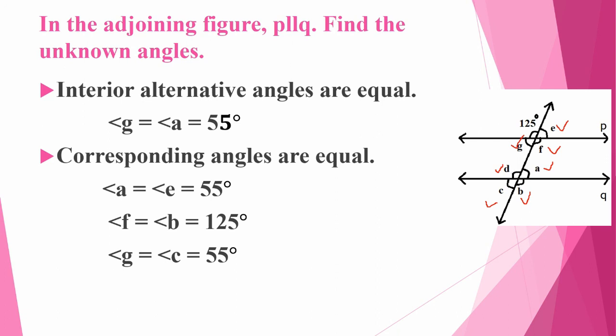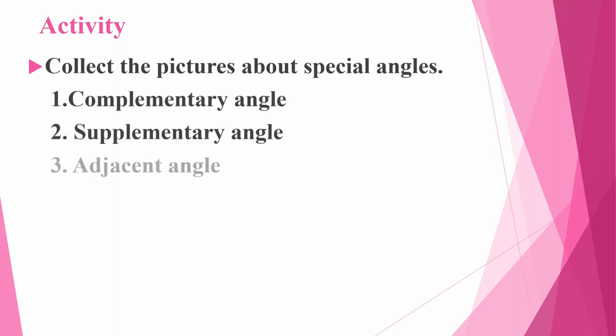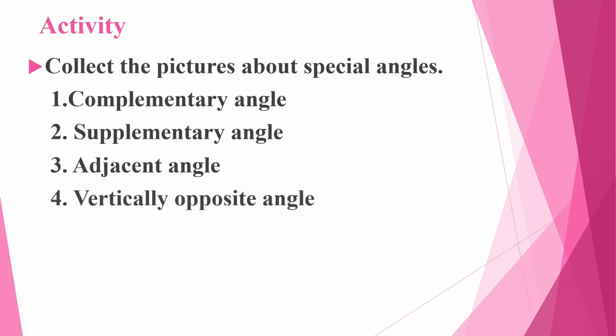So using only these properties, we can find the angles. Next, this is your activity: collect pictures about special angles. The special angles are complementary angle, supplementary angle, adjacent angle, vertical opposite angle, and transversal. About these five angles, you have to collect some real-life application features and paste them. So in this video, we have seen transversal and in this lesson we have seen some special angles. Thank you, children.